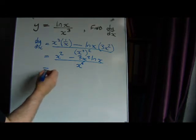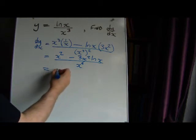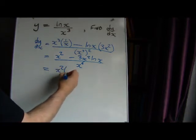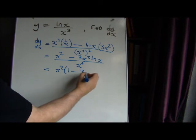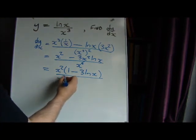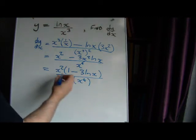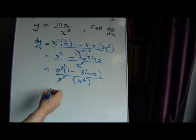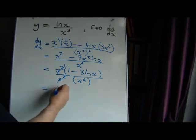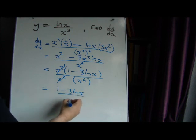There's some common factors of x that we can take out here. It's going to be x squared on the top. We can take that out minus 3 log x. On the bottom, if we take out a factor of x squared, it leaves us with x to the power of 4 on the bottom. So we can cancel those, and that leaves us with 1 minus 3 log x divided by x to the power of 4.